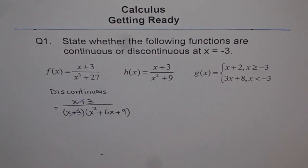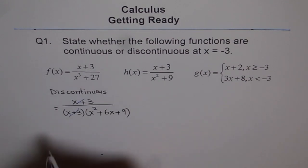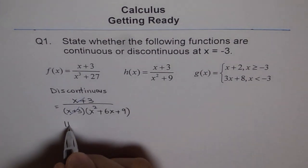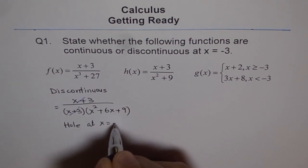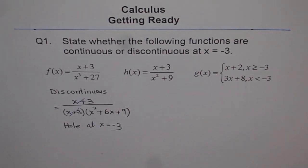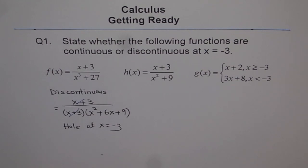That cancels out, and that means we have a hole at x equals minus 3. So this function is discontinuous — it is not a vertical asymptote at x equals minus 3, it is a hole at x equals minus 3. That is very important for you to understand.